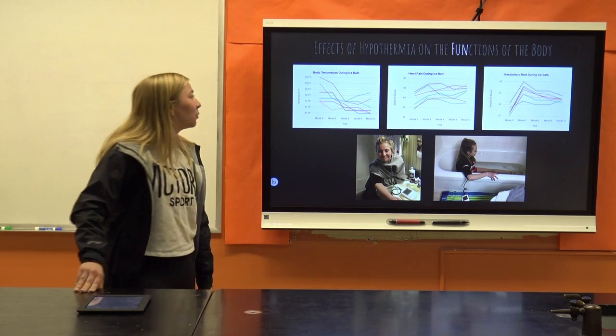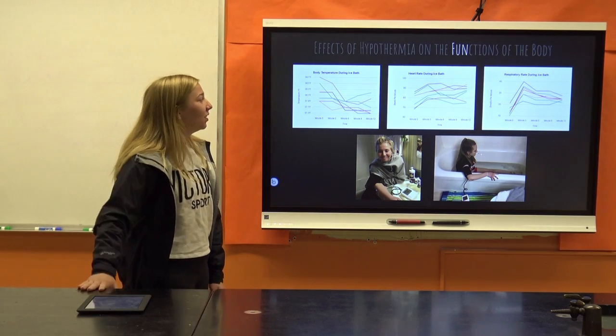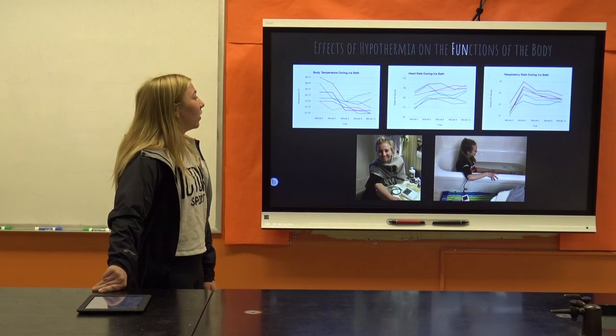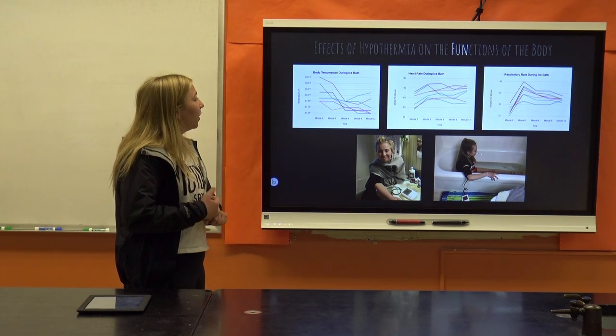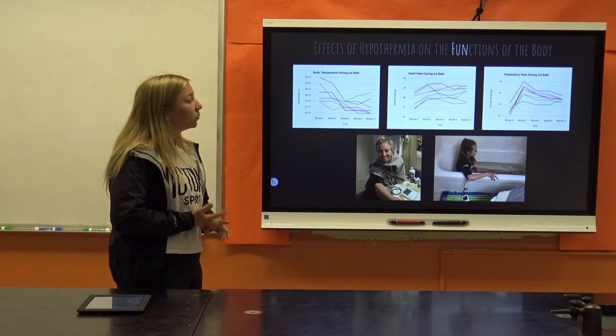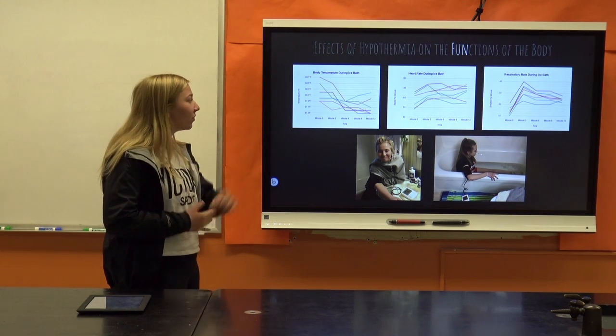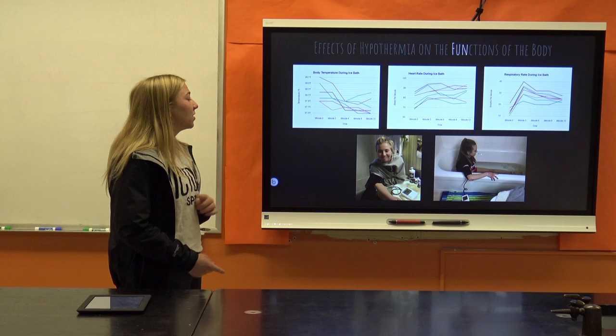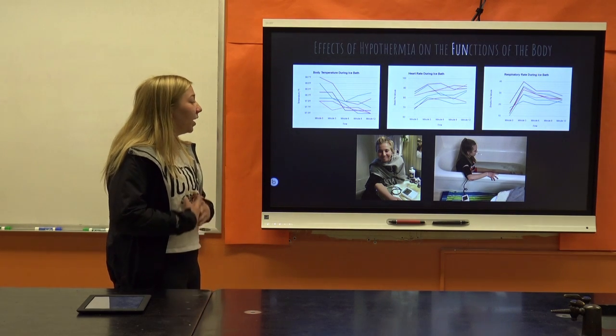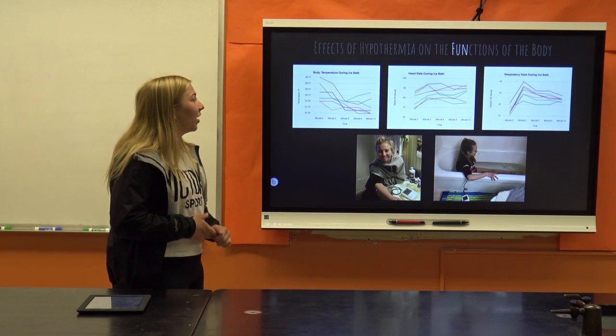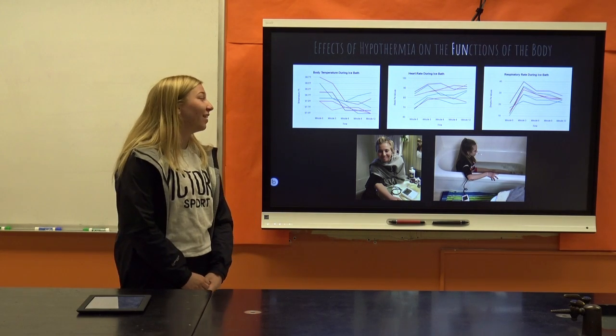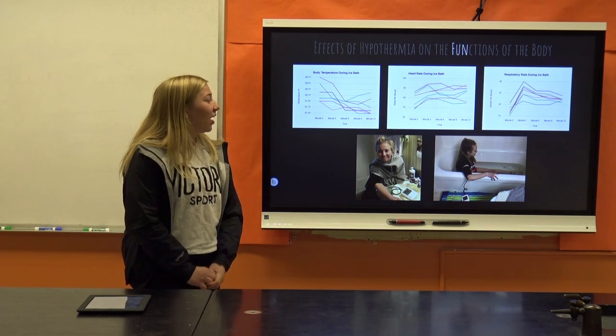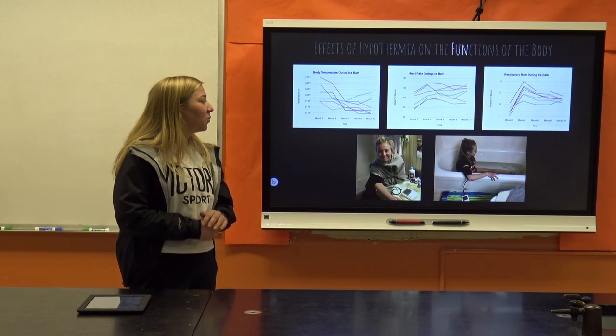So how I did this was I used an ice bath to mimic the environment of hypothermia, and I tested vital signs. I measured body temperature, heart rate, respiratory rate, and blood pressure. I tested these before, during, and after an ice bath. The temperature of my water was between 45 and 50 degrees, and that was really cold, and I had my participants stay in the water for 12 minutes.